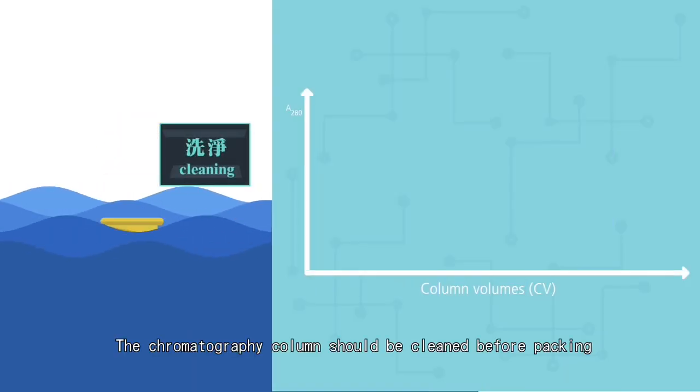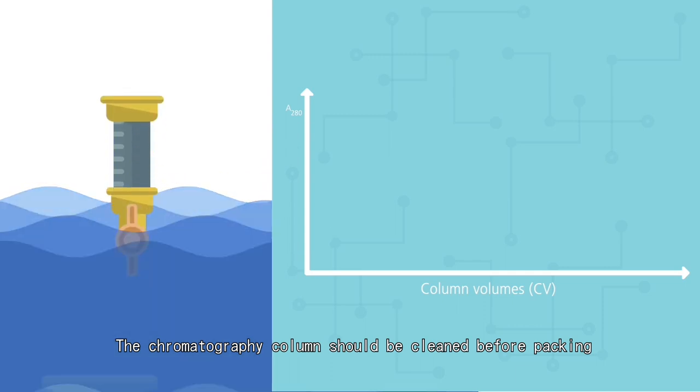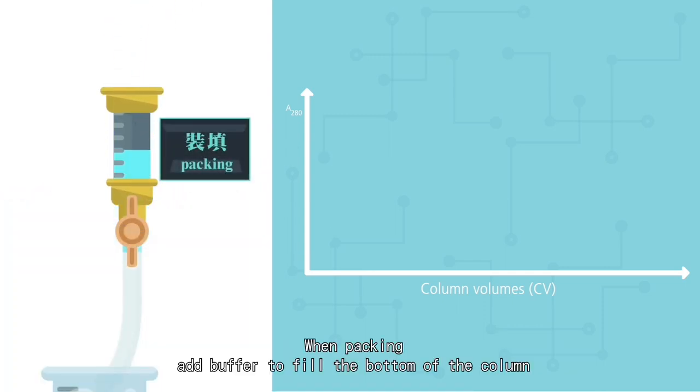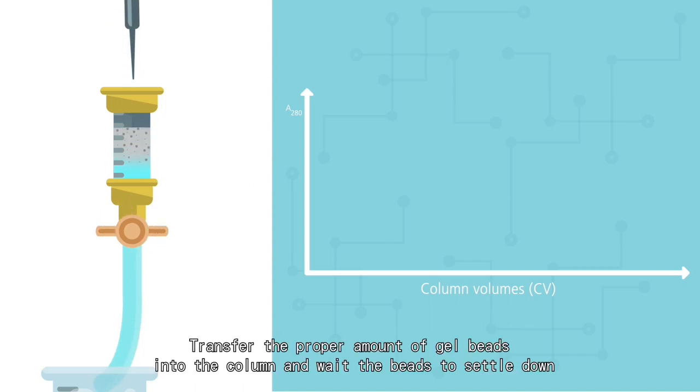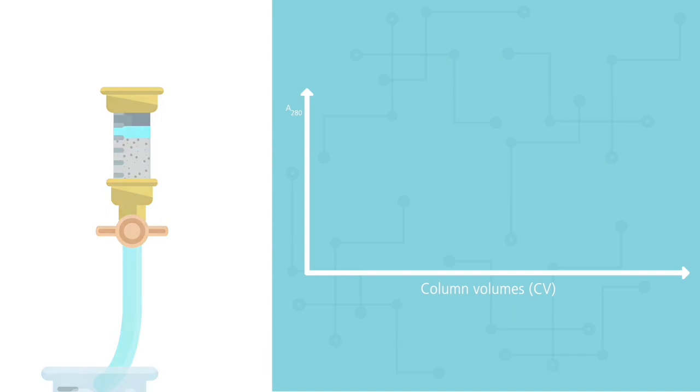The chromatography column should be cleaned before packing. When packing, add buffer to fill the bottom of the column and be careful not to generate bubbles. Shut the column valve. Transfer the proper amount of gel beads into the column and wait for the beads to settle down.